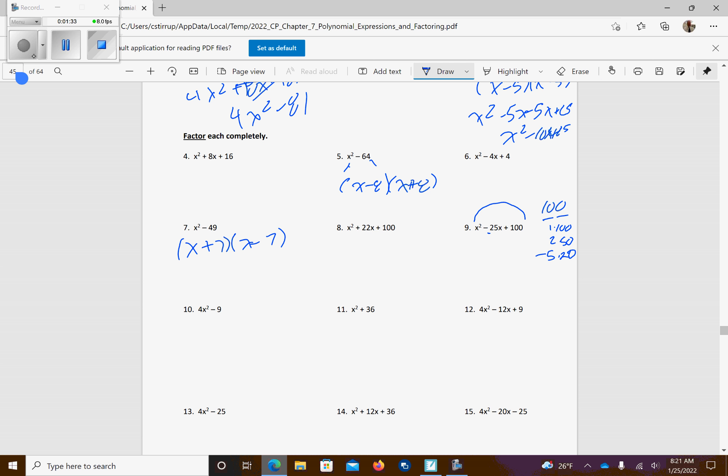5 and 20 are both going to work, because those are when they're both negative, add up to negative 25, so x squared minus 5x minus 20x plus 100. So if I factor out x minus 5, factor out negative 20, and that's going to change that sign to a negative. So you have x minus 5, x minus 20.